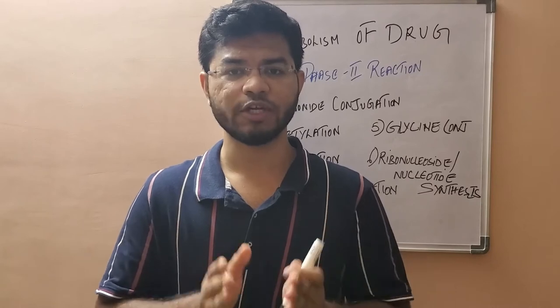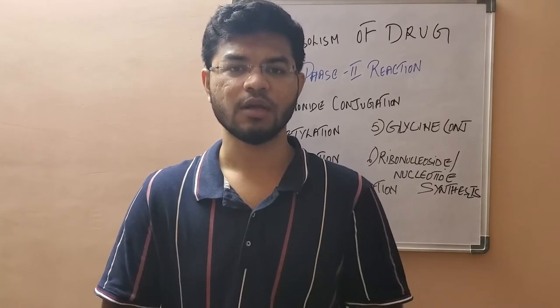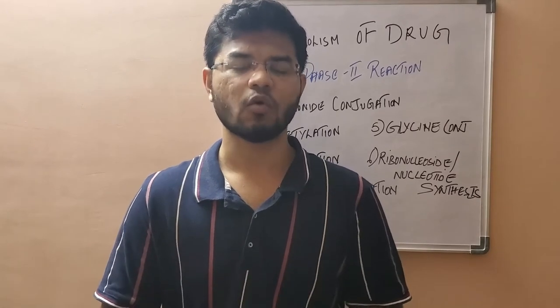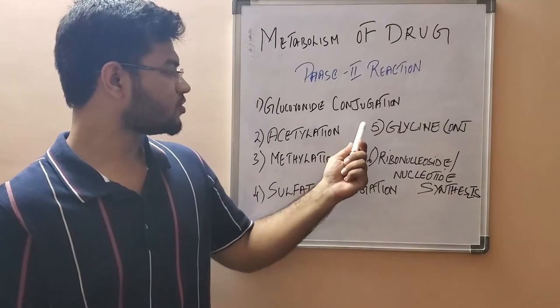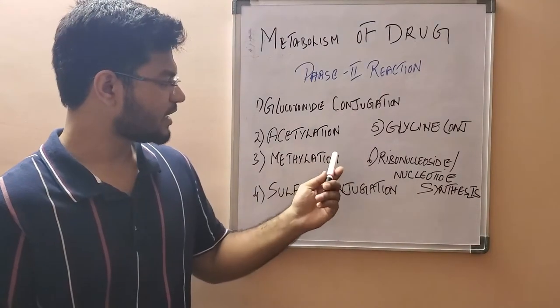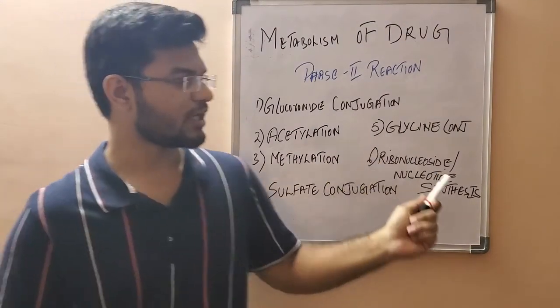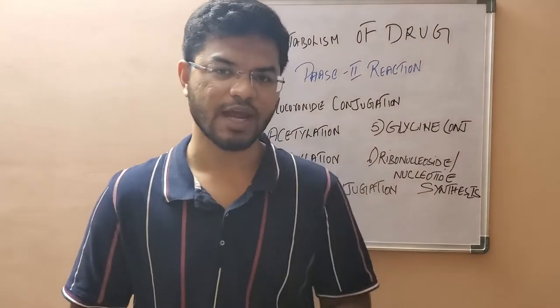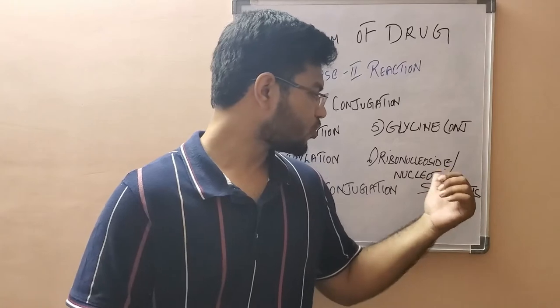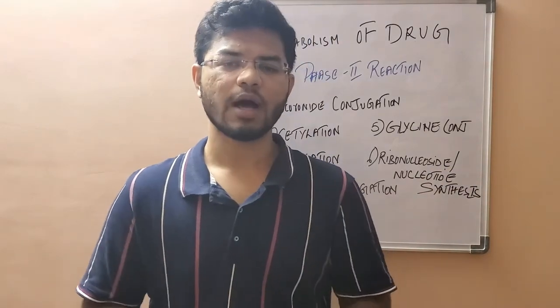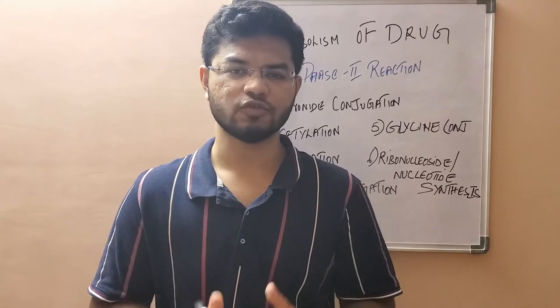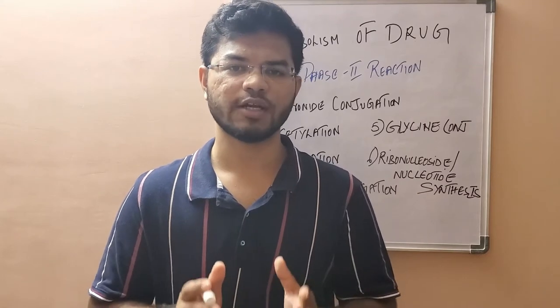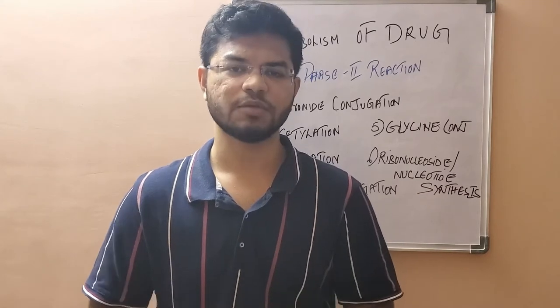The endogenous substrate pathways involved in Phase 2 reaction are: Glucuronide Conjugation, Acetylation, Methylation, Sulfate Conjugation, Glycine Conjugation, and Ribonucleoside and Nucleotide Synthesis. Let's go to the first conjugation pathway, which is the Glucuronide Conjugation pathway.